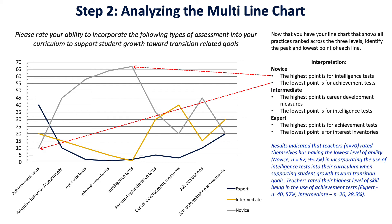Let's look at how to actually analyze multi-ranked grid question results through visual analysis. Say the question was: 'Please rate your ability to incorporate the following types of assessment into your curriculum to support student growth towards transition goals.' This visual analysis will show on the bottom (x-axis) all the different practices from your multiple choice ranking question, and on the vertical axis (y-axis) the number of individuals from your program evaluation tool that selected that particular response.